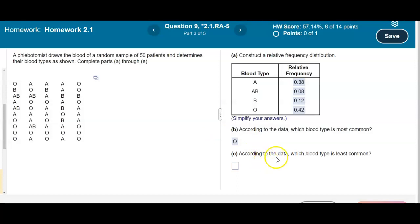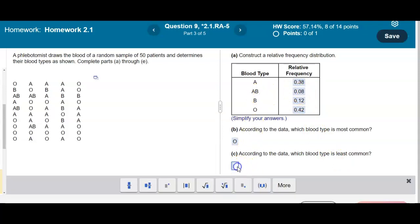Now the next question says, according to the data, which blood type is least common? Which is the smallest percent? Well the smallest percent in this case is 8%, which is blood type AB.